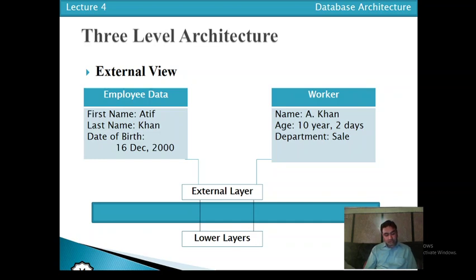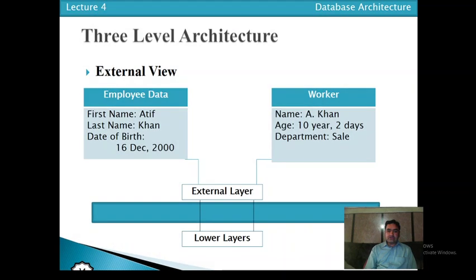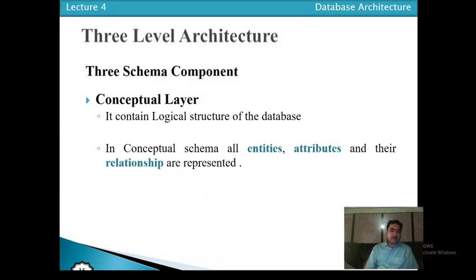The database is accessed by different user groups, and every user group accesses data according to their requirement. For example, the student user group accesses data by their requirement and has no concern with the data that teachers are viewing. This is the external level. Below the external level, there are lower-level layers. At the external layer we have different user views — for example, teacher view, student view, HOD view, or any other view.